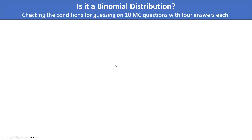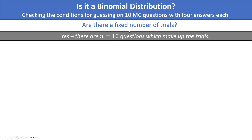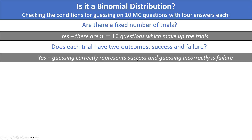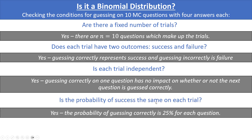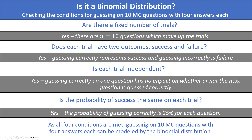Let's practice by checking the conditions for guessing on ten multiple-choice questions, where each question has four answers. Number one: are there a fixed number of trials? Yes, n equals ten, which are the ten questions, and each question makes up a trial. Number two: does each trial have two outcomes, success and failure? Yes — guessing correctly represents success and guessing incorrectly represents failure. Number three: is each trial independent? Yes, guessing correctly on one question has no impact on whether the next question is guessed correctly. Number four: is the probability of success the same on each trial? Yes, the probability of guessing correctly is 25% for each question. As all four conditions have been met, this situation can be modeled by the binomial distribution.